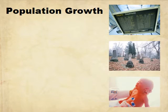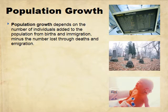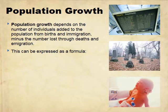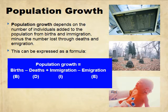For population growth, you have the number of individuals added and the number taken away. When we're talking about the Earth, you can only be born into it or die out of it. But when talking about a country or a population in a certain area, you can also have immigration and emigration. So it's your births minus your deaths plus your immigration minus your emigration. Things coming in — births and immigration — are positive; things going out — deaths and emigration — are negative. That determines how fast your population is growing or shrinking.